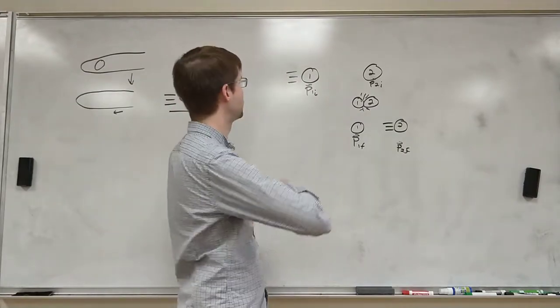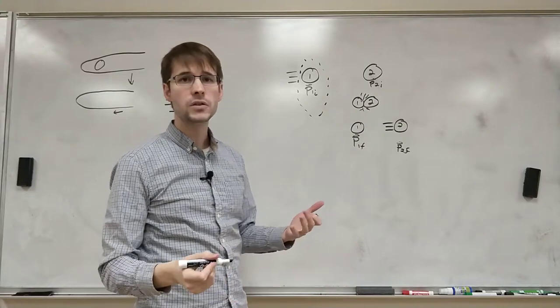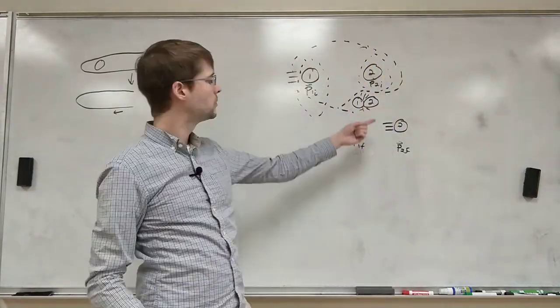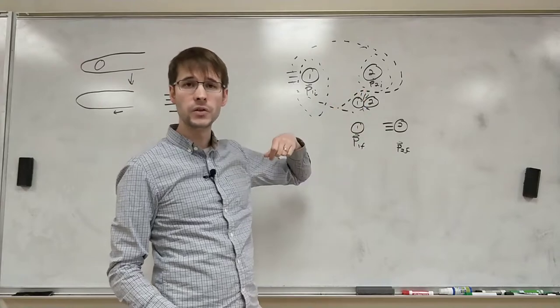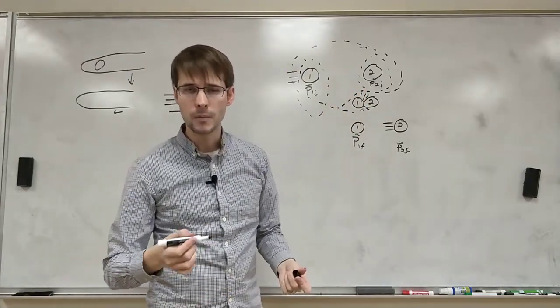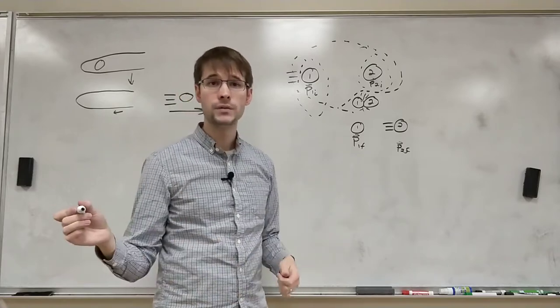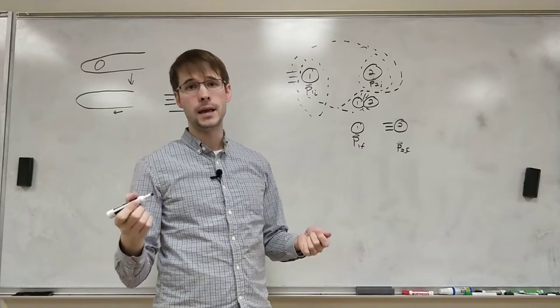The first one is just ball one. We've got two others. We've got a system that just includes ball two and a system that encompasses both of them, includes them all together. Let's take a quick look at the momentums for each of these systems at the beginning and at the end.